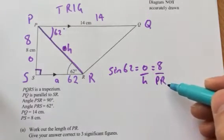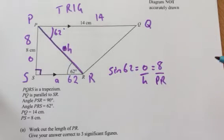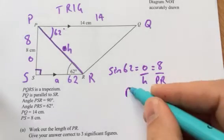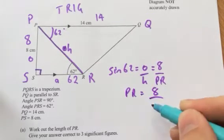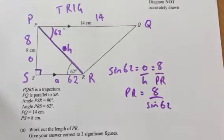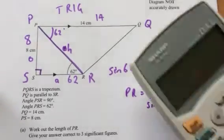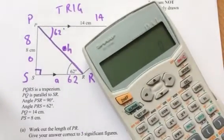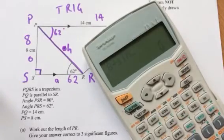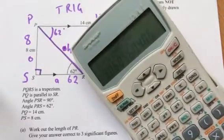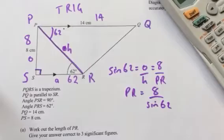And now notice that PR, the unknown, is in the denominator. So I can't just calculate it in the usual way and multiply. I've got to bring the PR up and then divide by sine 62. So I'm using my calculator there. I can do this in one step. 8 divided by sine 62, and I get 9.0605.